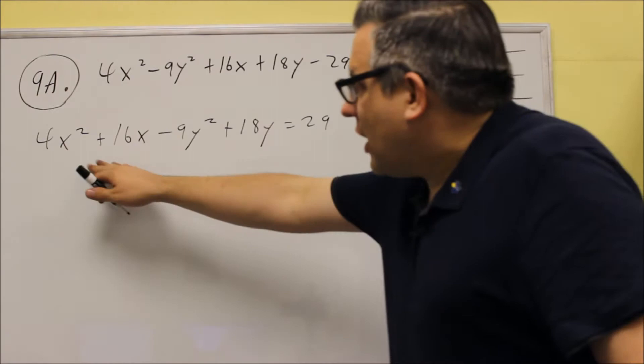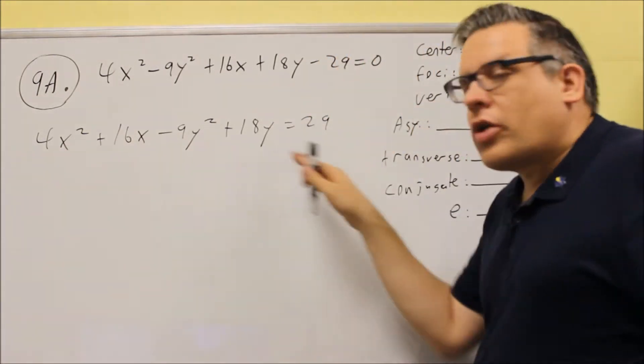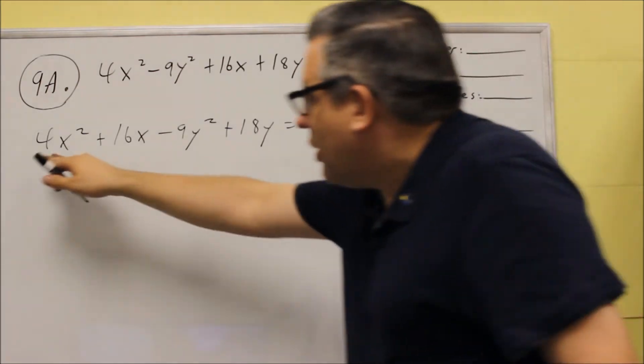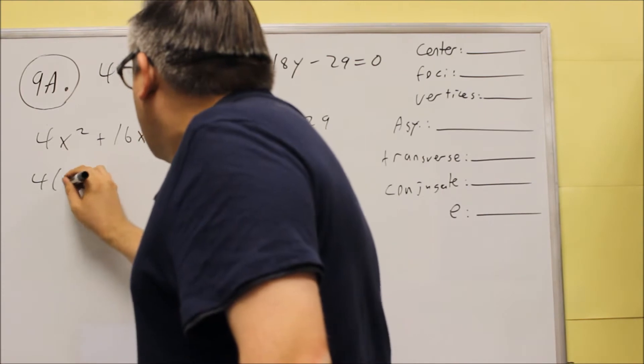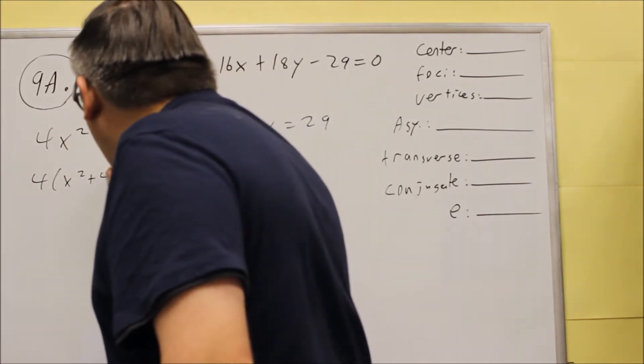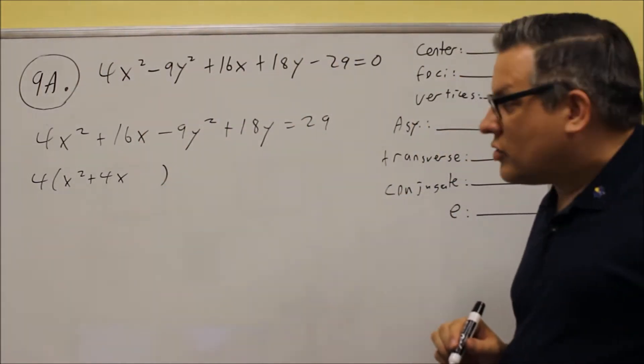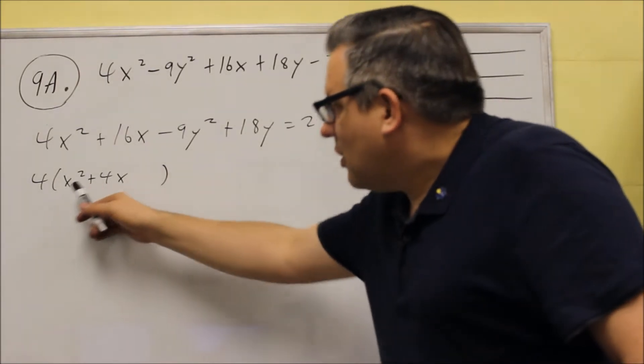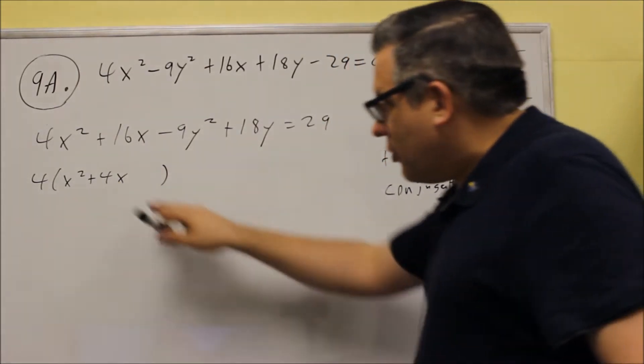We're going to put the 29 on the other side of the equal sign, so we would just have variables on the left-hand side. At this point, now that the x's and y's are together, you want to factor a number out of each of those. So you don't want to factor out a y, just factor out a number from both of those.